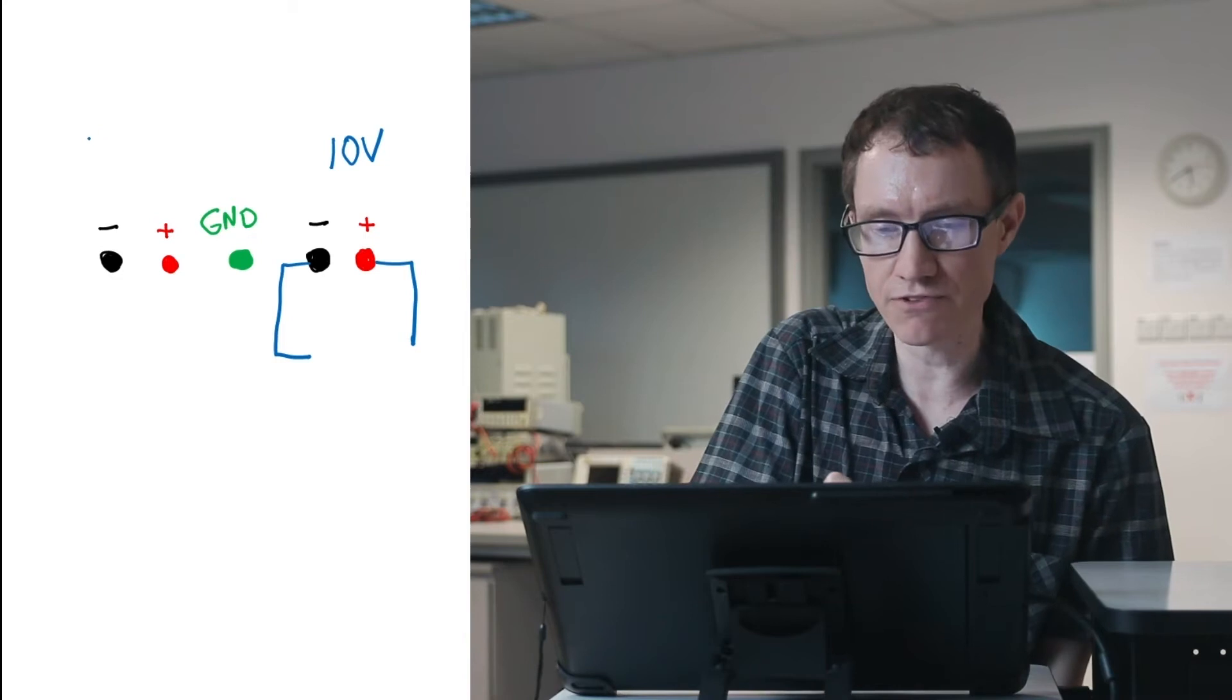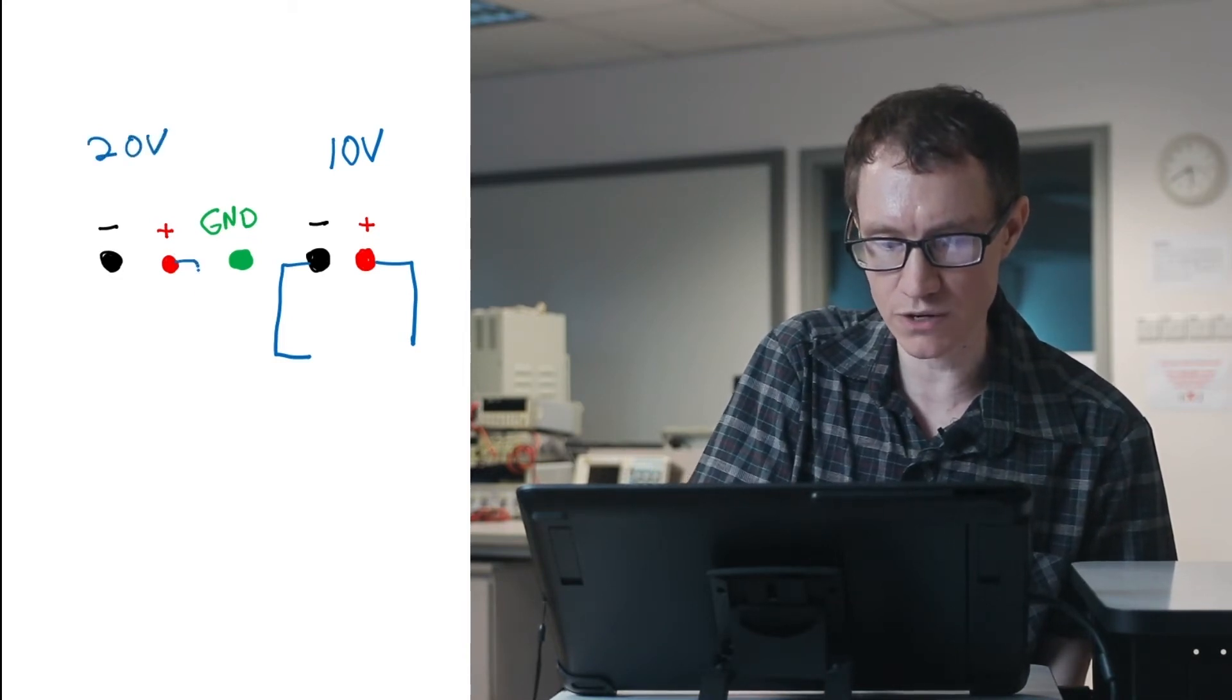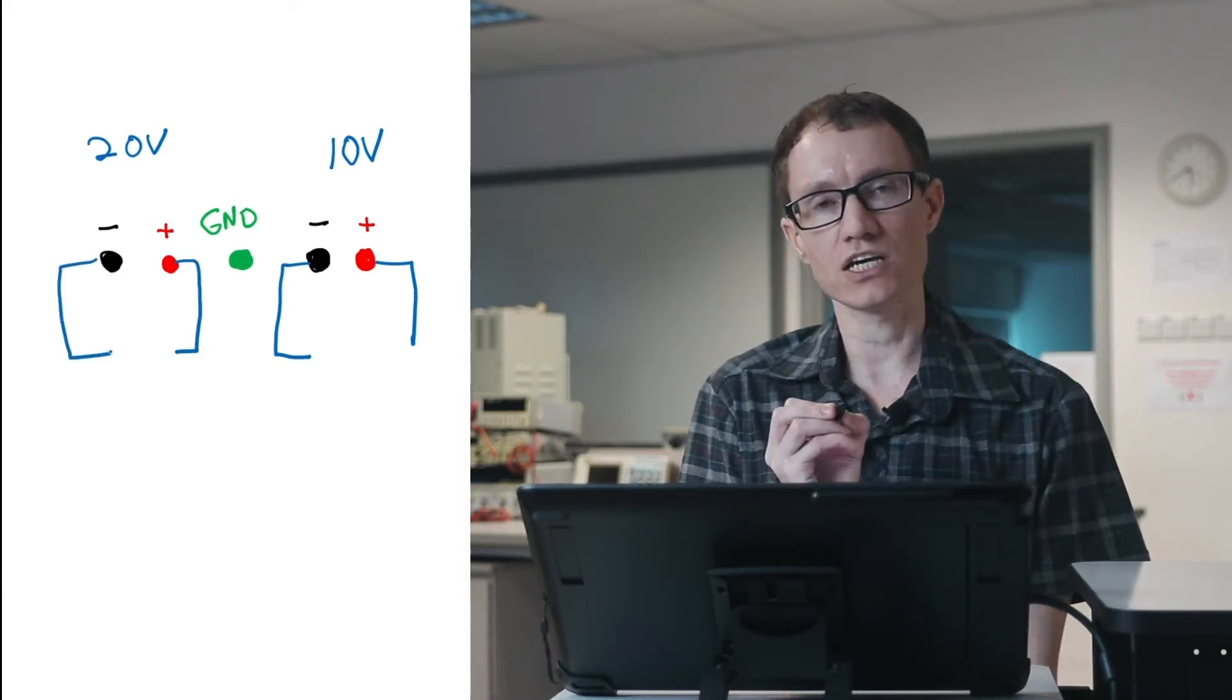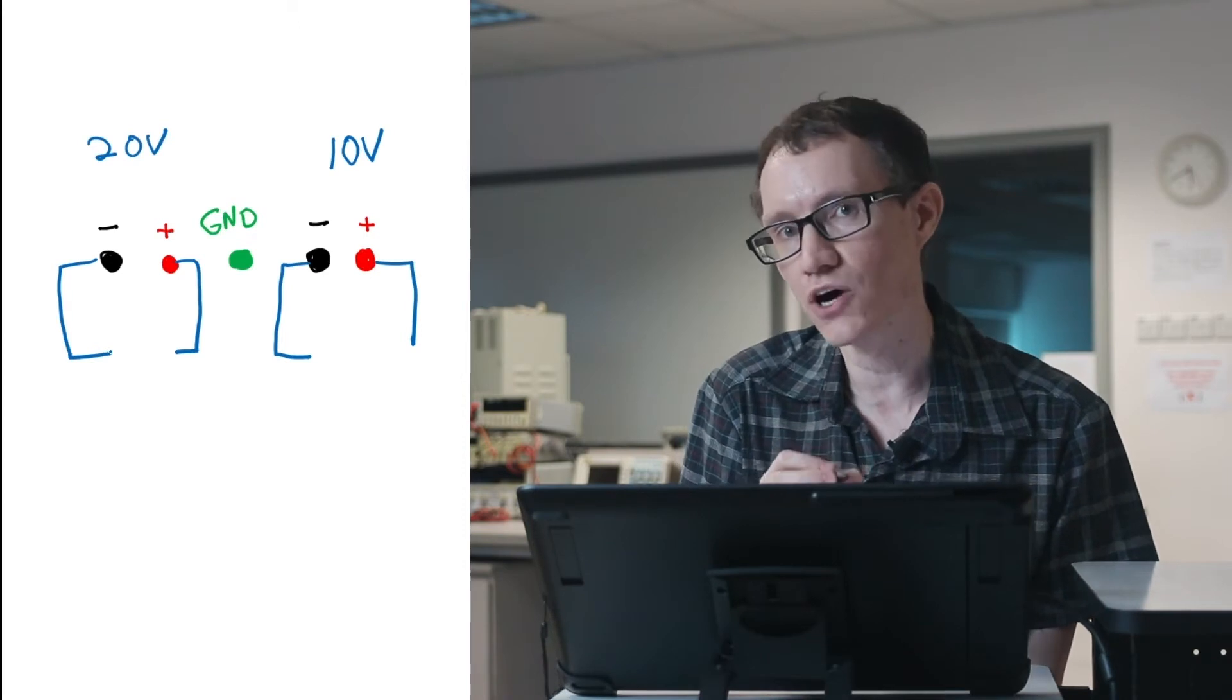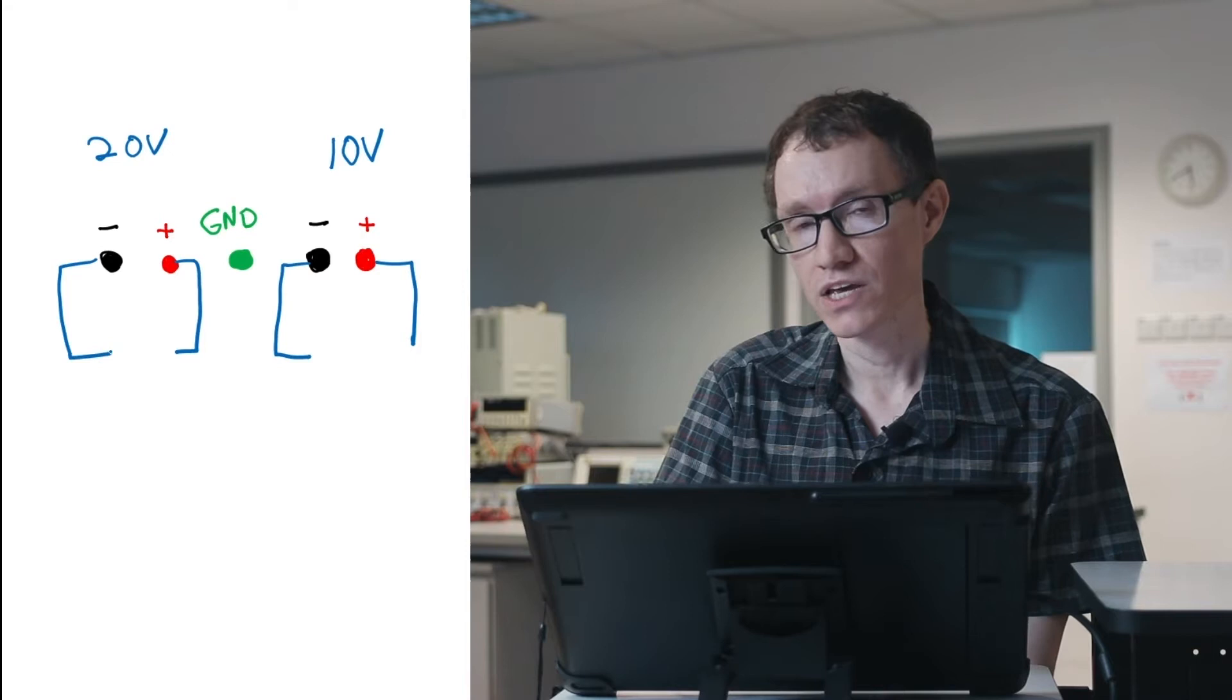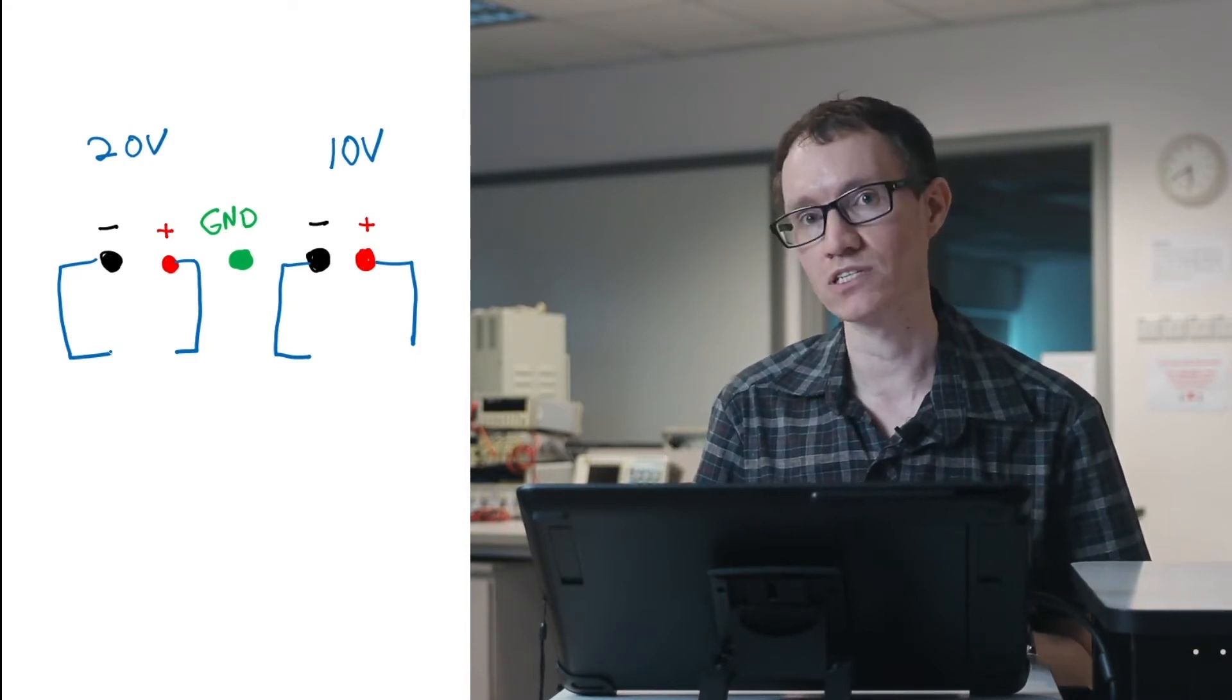Over here on the left, if I were to dial in 20 volts, it means that there would be a 20-volt difference between these two terminals. It's very important to know that these two voltages are not related to one another. In other words, this is an example of a floating DC power supply.